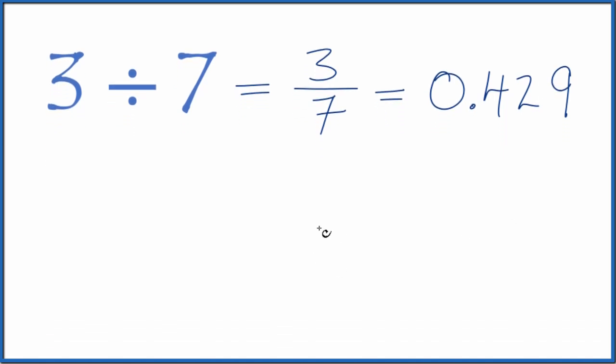We could also do it longhand. We could take 3, see how many times 7 go into 3. It doesn't go into 3. Let's call it 30 and then put a 0 at the point up here.